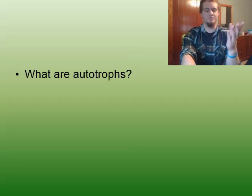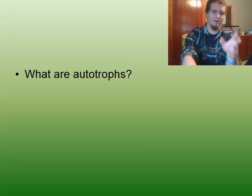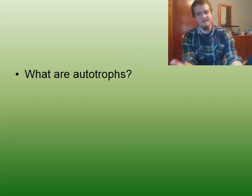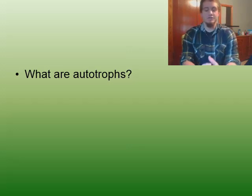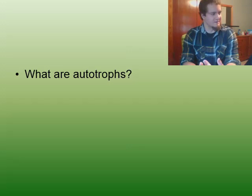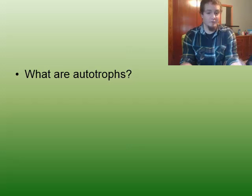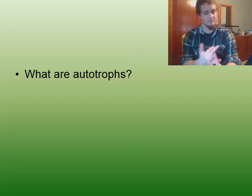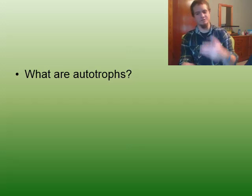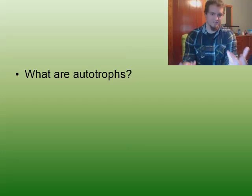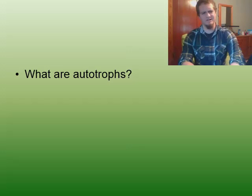The first question we have to answer is: what are autotrophs? Simply put, an autotroph is anything that can make its own food. Autotrophs would be things like photosynthetic organisms, like plants and some types of algae, as well as chemosynthetic organisms, which use chemicals instead to make their energy, much like a lot of forms of bacteria.